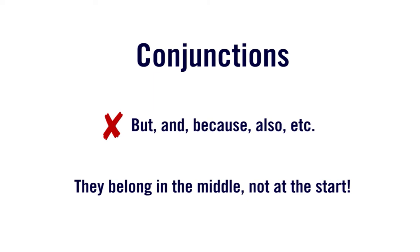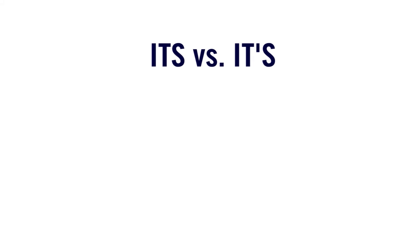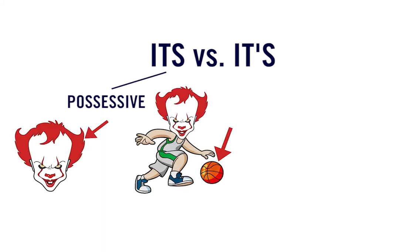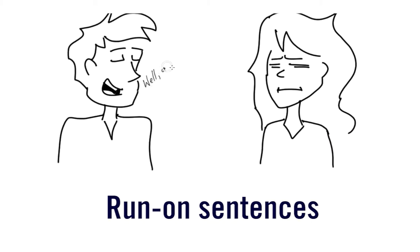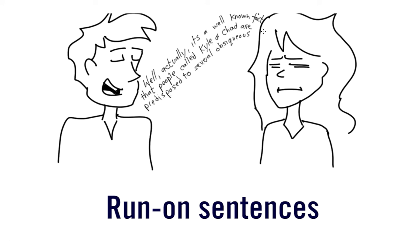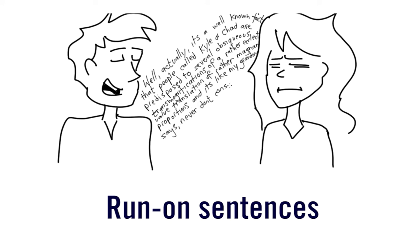Another common mistake is starting a sentence with a conjunction. Words like 'but,' 'and,' 'because,' and 'also' belong in the middle of a sentence, not at the start. The difference between 'its' and 'it's' is also important. ITS with no apostrophe refers to a possessive pronoun showing ownership, like 'its hair' or 'its ball.' IT'S with an apostrophe refers to a contraction meaning 'it is,' like 'it's a boy.' Run-on sentences are also something to watch out for — when you've made your point but keep going. Most people try to expand their sentences to sound smarter, but in forensic science it makes you sound like you're stalling and don't know what you're talking about. So keep it concise.